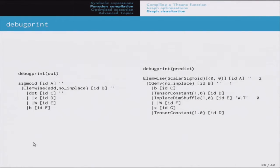Another graph visualization tool is debug_print, which prints a text-based tree-like structure of the graph, assigning arbitrary IDs and printing variable names. Here you can see the structure in more detail, including the inputs to GEMv and the scaling parameters.